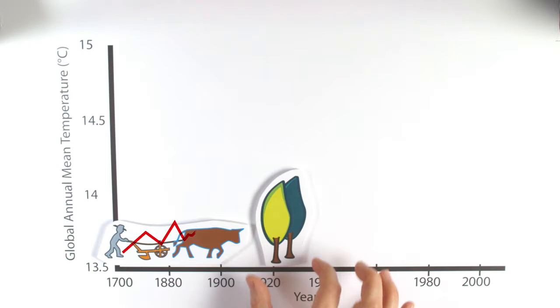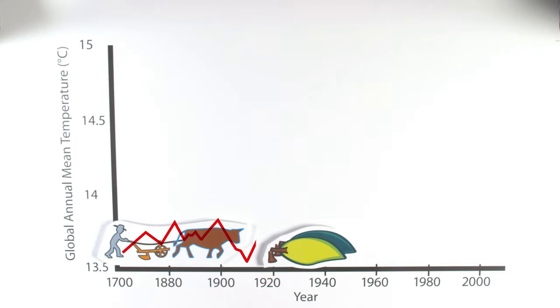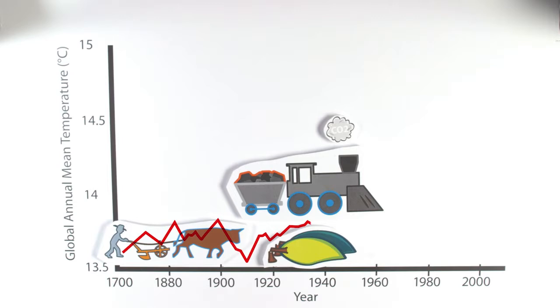Up to about 1900, agriculture, deforestation, and land use were the main human sources of carbon dioxide to the atmosphere. After 1900, burning fossil fuels like coal and oil became the dominant source.